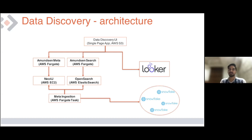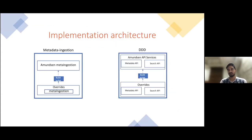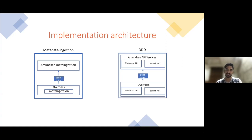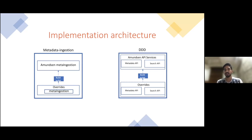We basically have two major projects: meta-ingestion and DDD. We do not directly make changes in Amundsen's main repo. Rather, we pull in Amundsen services and have a parallel overrides folder. The overrides folder has exactly the same structure as the Amundsen service, but contains only the files we want to edit or modify. A build script then copies overrides onto Amundsen services to produce our own custom flavor of Amundsen. Meta-ingestion runs on schedule and ingests data from different businesses. DDD hosts the API and other services like Neo4j and Elasticsearch from Amundsen.